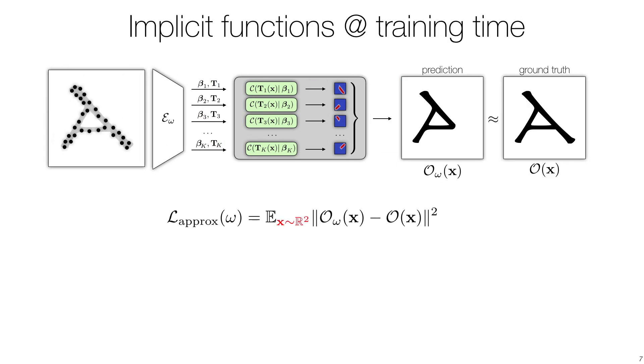We train our network via a stochastic loss. Given a batch of query points, our network predicts the corresponding occupancy, and gradients are back-propagated whenever there is a mismatch with ground truth.